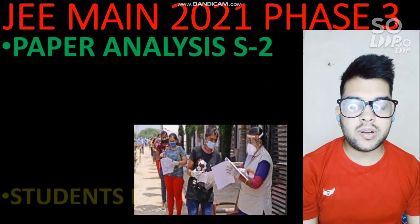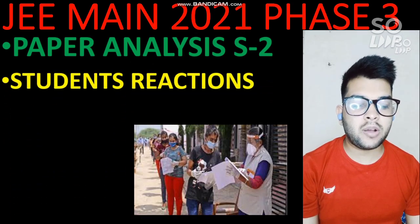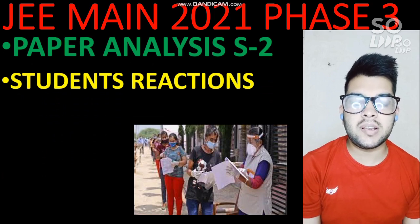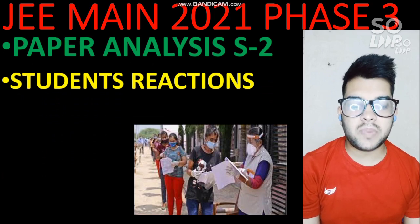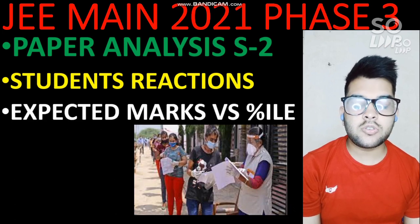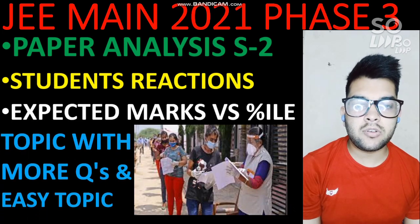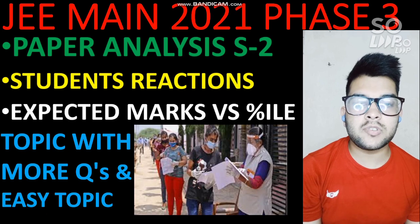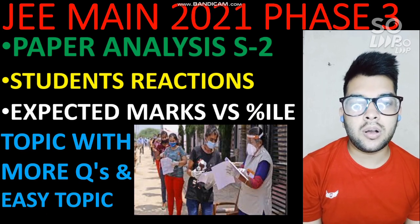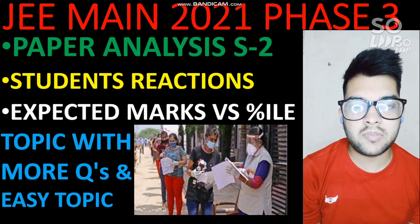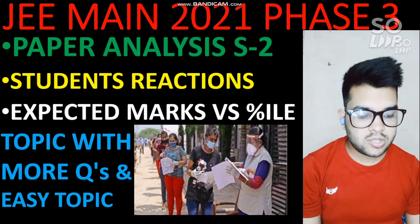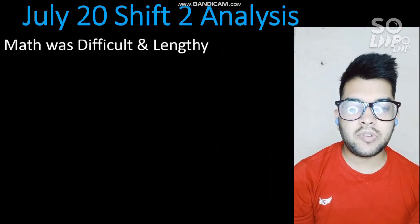The paper analysis of Shift 2 covers: how difficult the paper was according to student reactions, the subject-wise difficulty level, marks versus expected percentile, topics with more number of questions, and easy topics you can focus on for the next shift if you still have to appear in the upcoming examination.